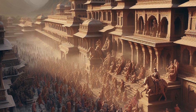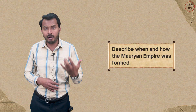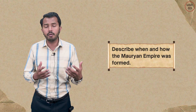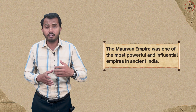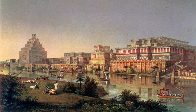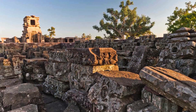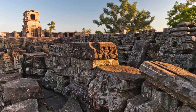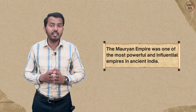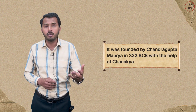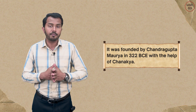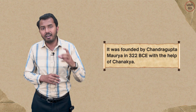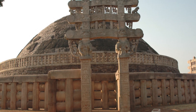We will see when the Mauryan Empire was established and how it came to be. The Mauryan Empire is considered one of the most influential and powerful empires in ancient India. This empire was founded by Chandragupta Maurya around 322 BC.